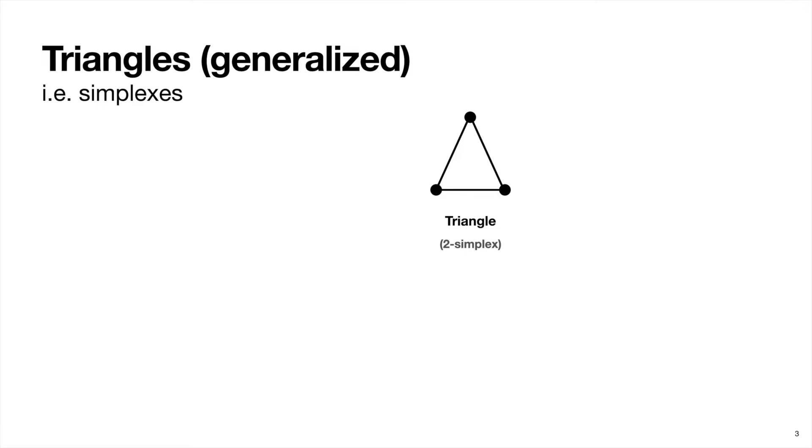So the triangle that we know and love is called a two-simplex, since it lives in two dimensions. A line segment is the simplest shape we can construct in one dimension, and it's called a one-simplex. Similarly, a tetrahedron is called a three-simplex, and a point is a zero-simplex, and so on for all the other dimensions.